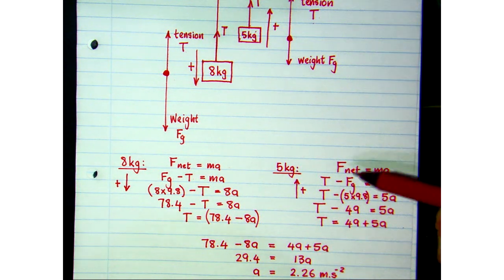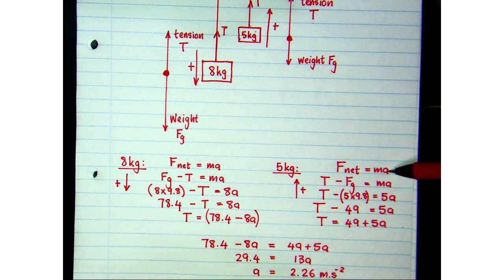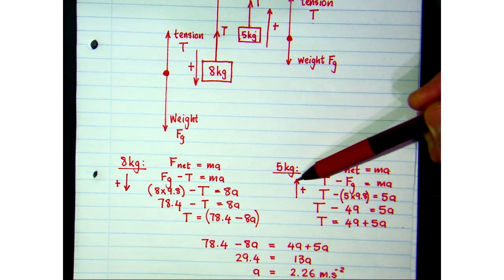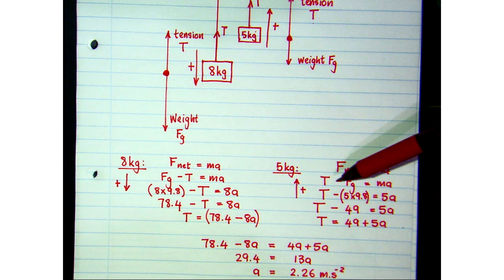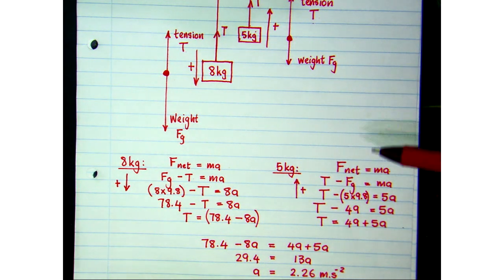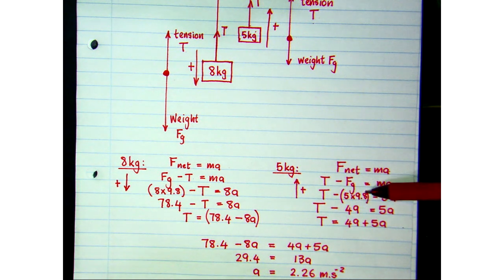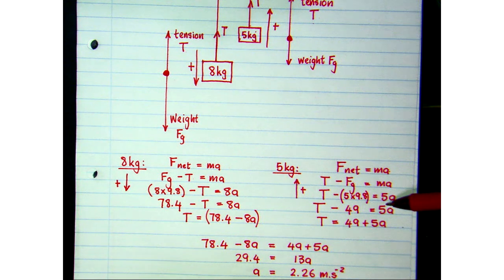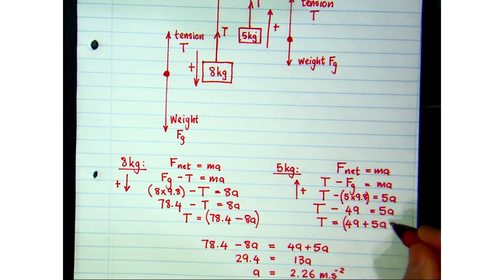If we do the same for the 5 kg, we're applying Newton's second law to that. Here, up is positive. So, my expression for the net force is upward tension force minus downward weight. And, if I work out the weights, I get T minus 49 is 5a, the mass here is 5 kgs, and I solve for T, and I get my second expression for T.